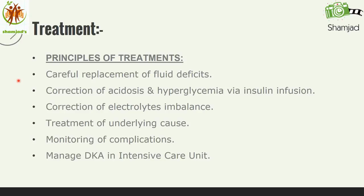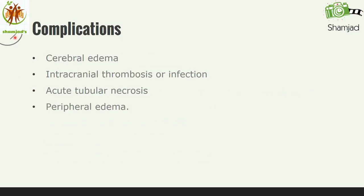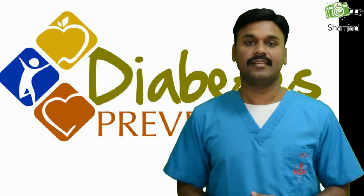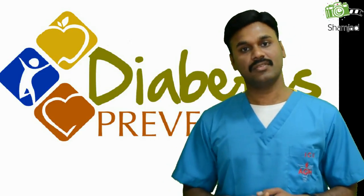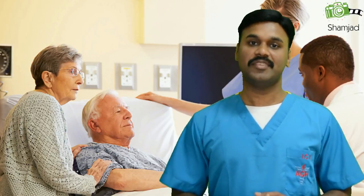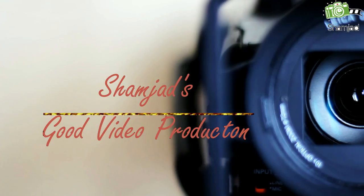Monitoring includes checking blood sugar hourly, electrolytes every 2 to 3 hours, neurologic and mental status frequently, and vital signs continuously. Manage DKA in an ICU setup to give intensive attention. Serious complications of DKA include cerebral edema, intracranial thrombosis or infection, acute tubular necrosis, and peripheral edema. Prevention is better than cure. All diabetic patients are at risk for DKA and other complications if they do not maintain their blood sugar and lifestyle. Proper health education is key — educate patients on how to maintain blood sugar, lifestyle, and habits, and give them awareness about the consequences of diabetes. I hope you enjoyed this class. Thank you for your time.